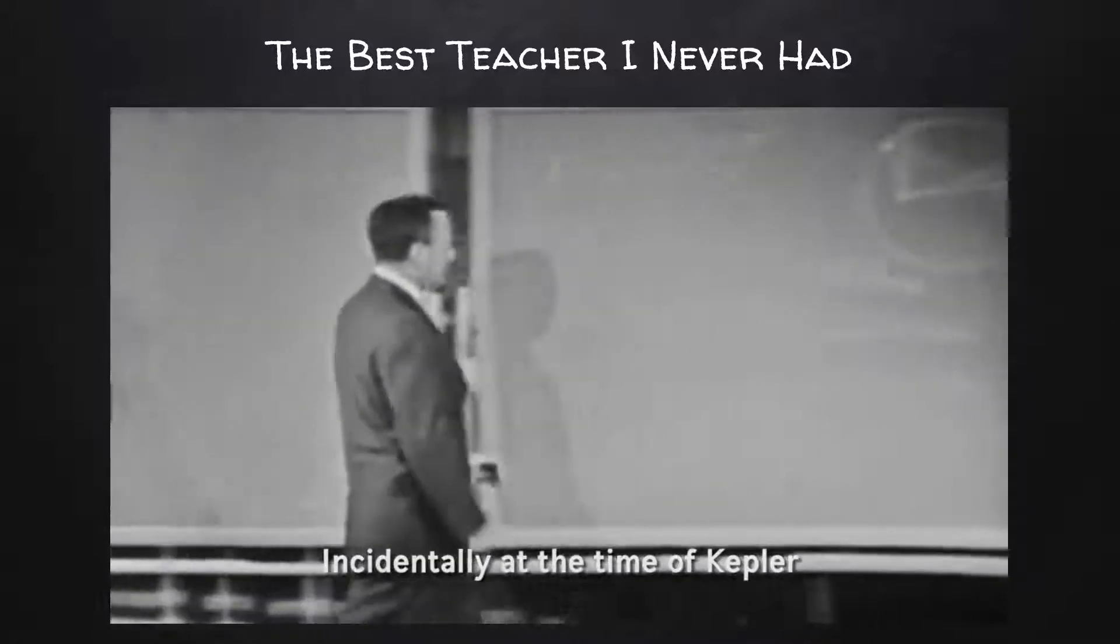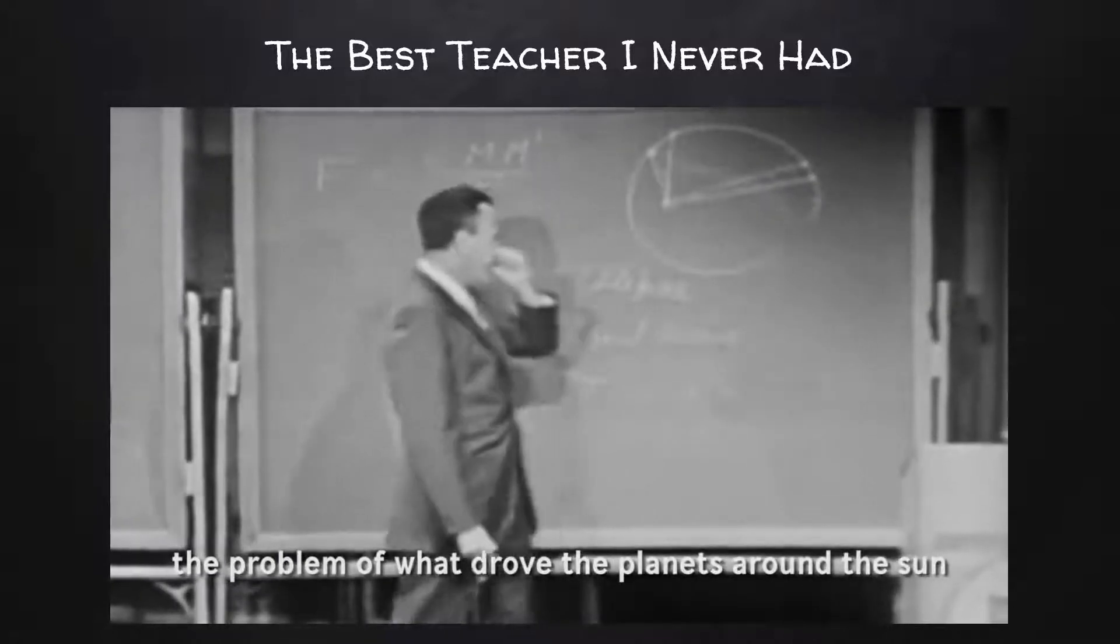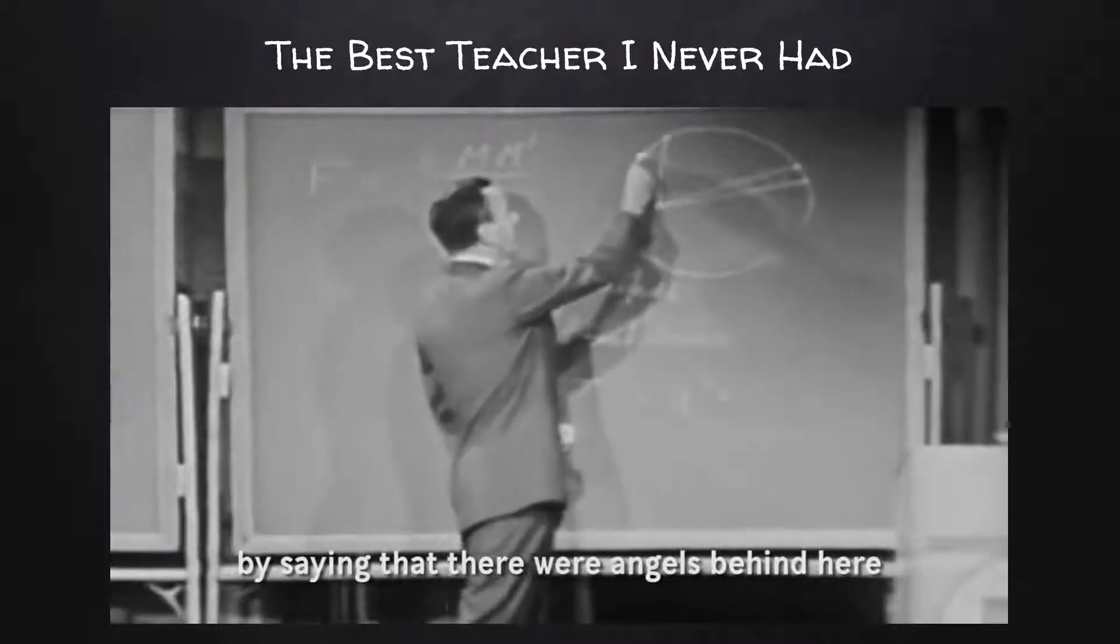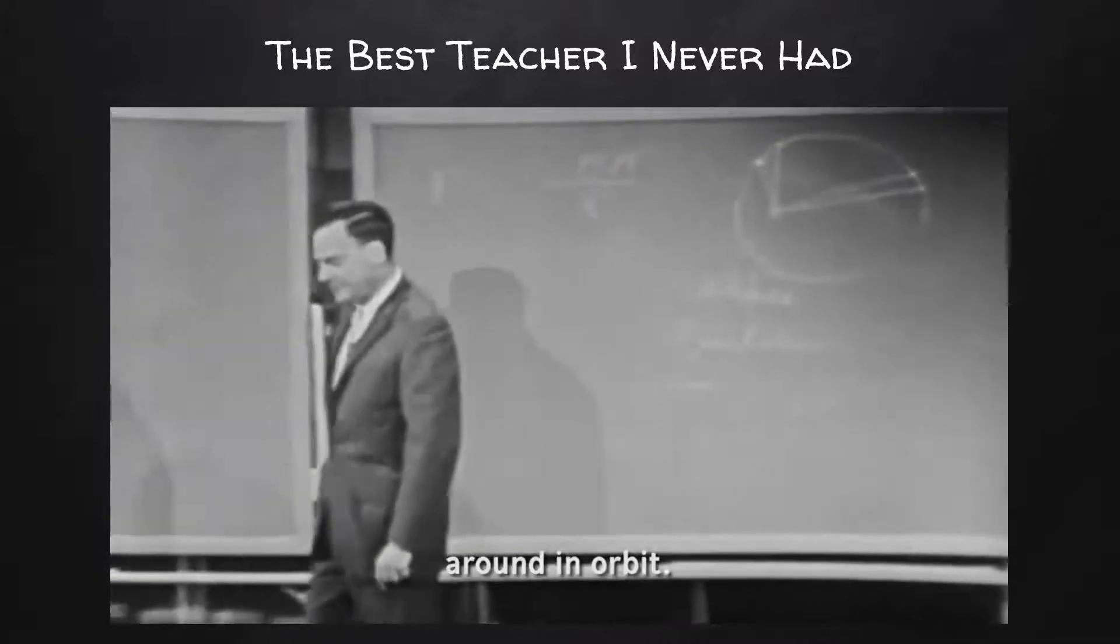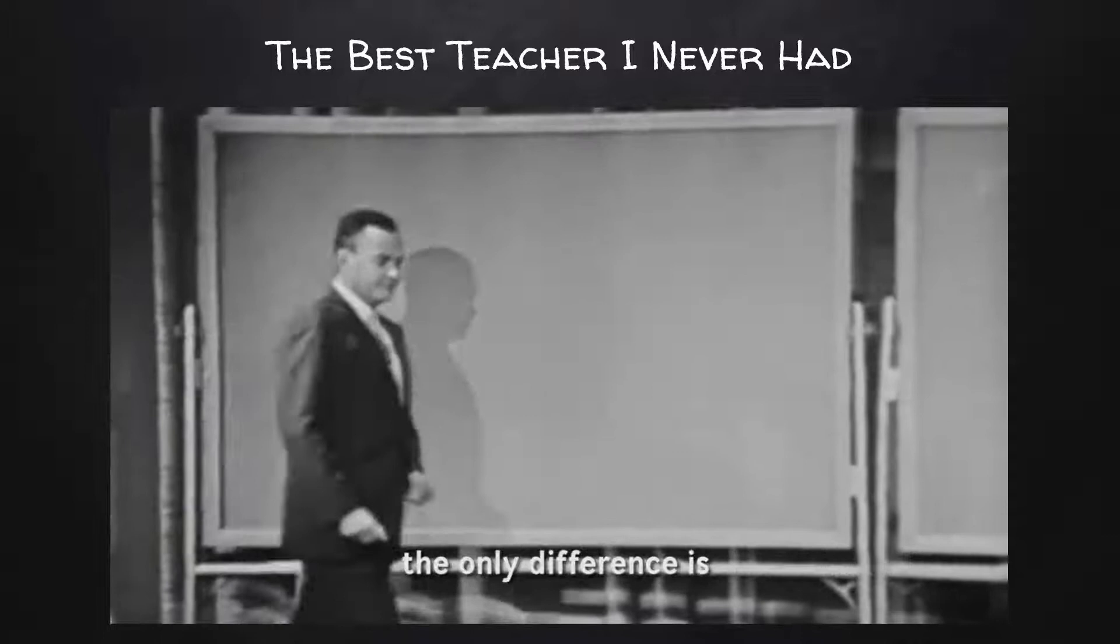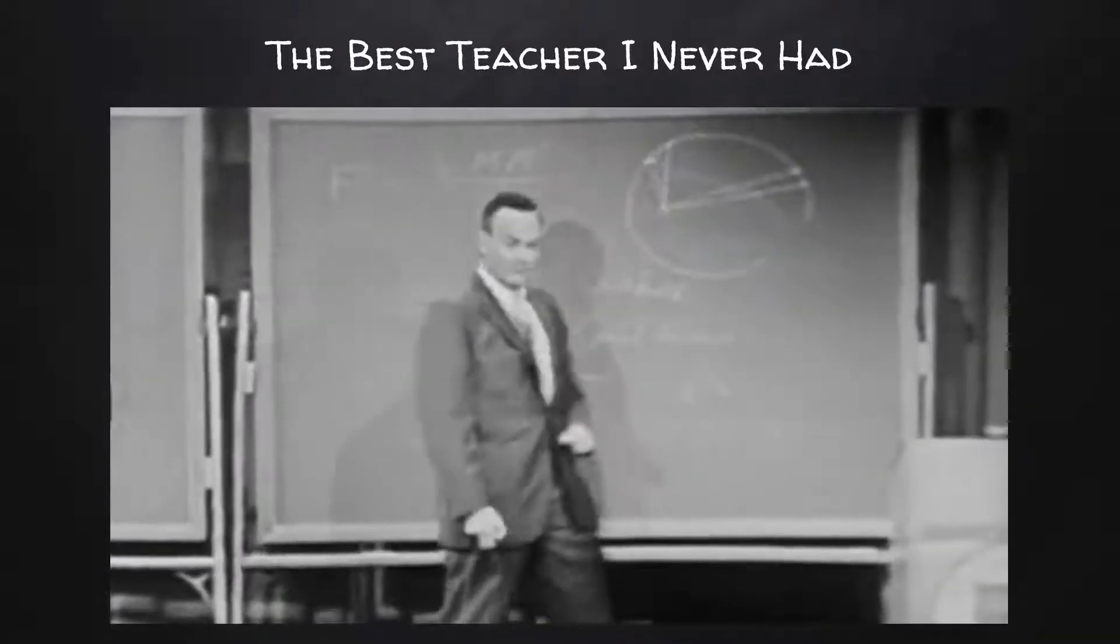Incidentally, at the time of Kepler, the problem of what drove the planets around the sun was answered by some people by saying that there were angels behind here beating their wings and pushing the planet along around orbit. As we'll see, that answer is not very far from the truth. The only difference is that the angels sit in a different direction and the wings are going on.